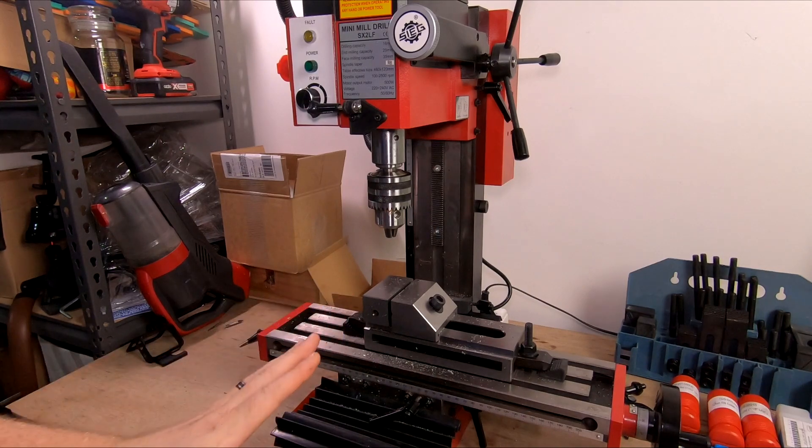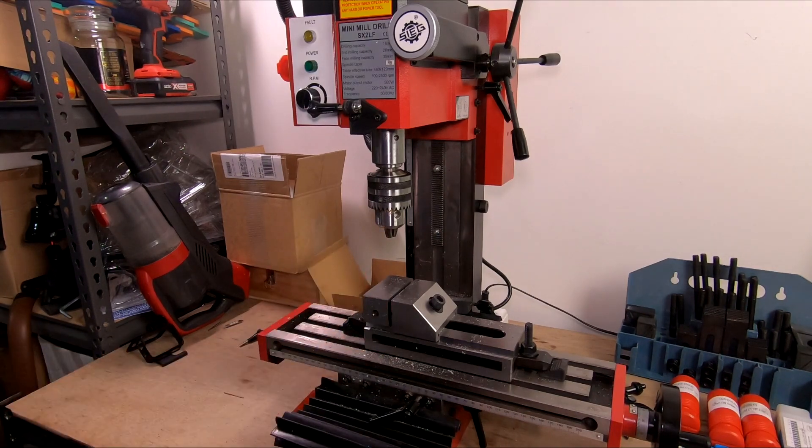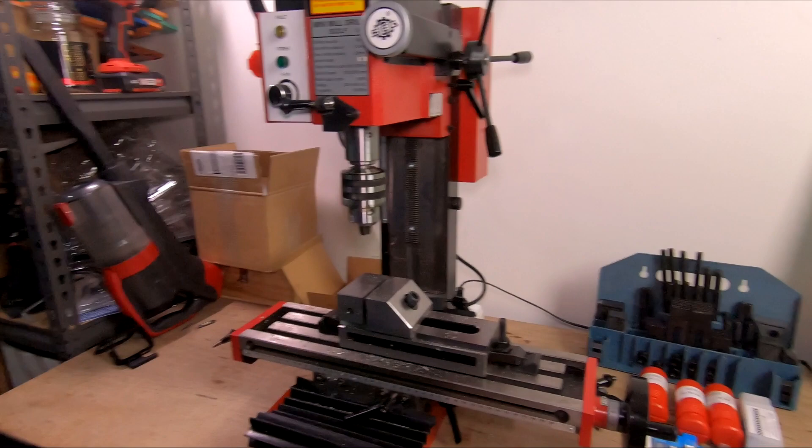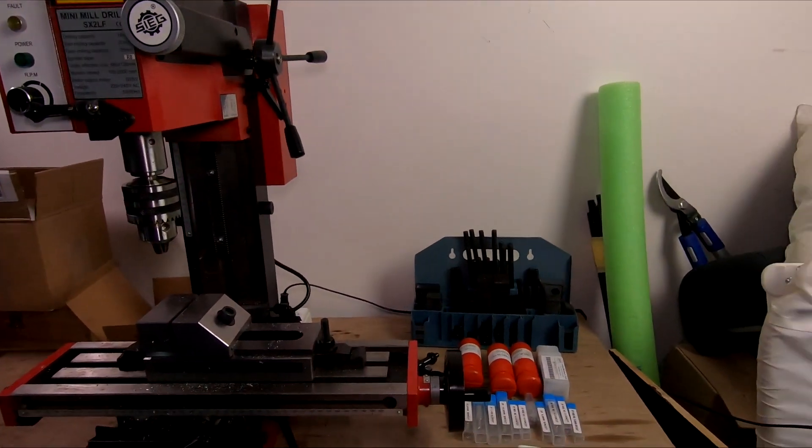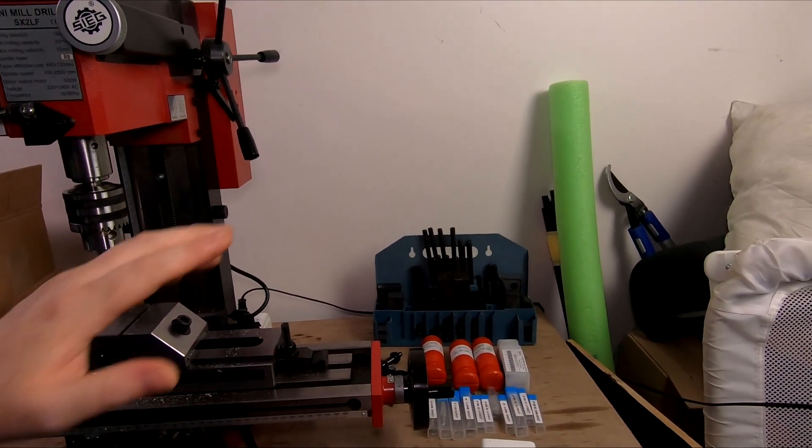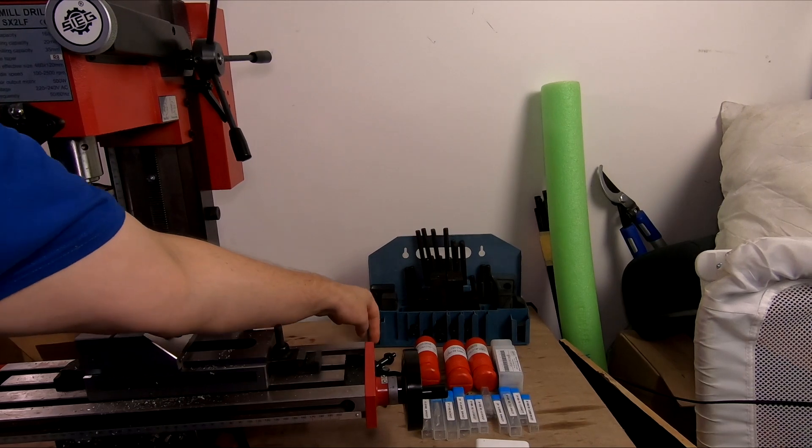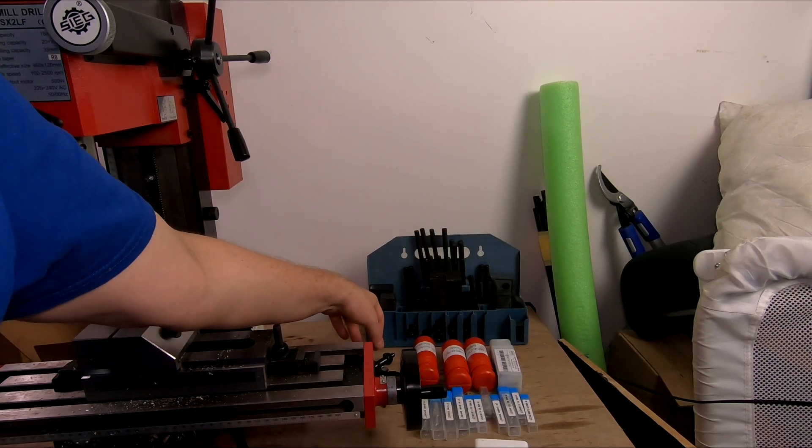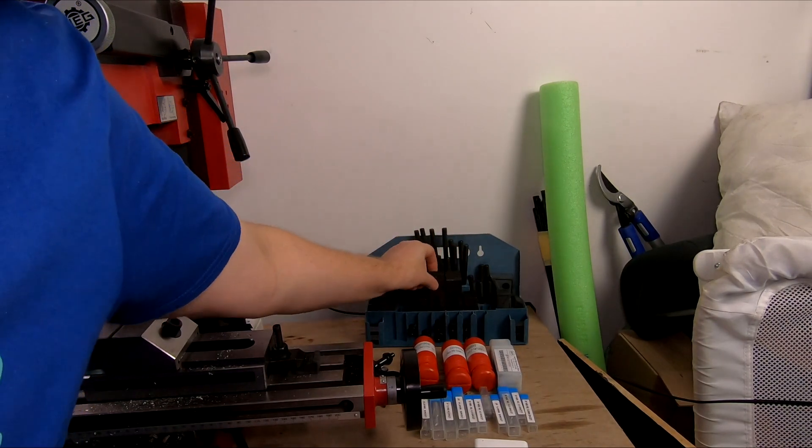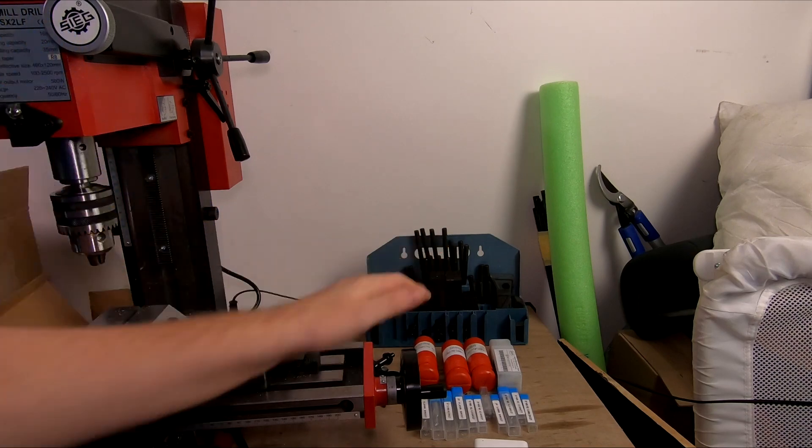This kit we picked up is a starter kit which comes with this vise here. You can also see right at the back we have the clamp-down kit, which I think is 58 pieces. It gives you all the different studs, different clamps and everything, which will get you sorted.